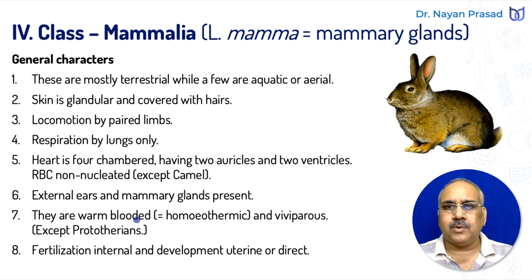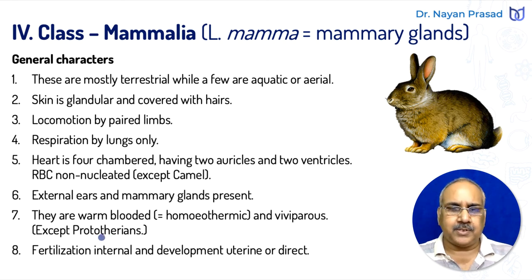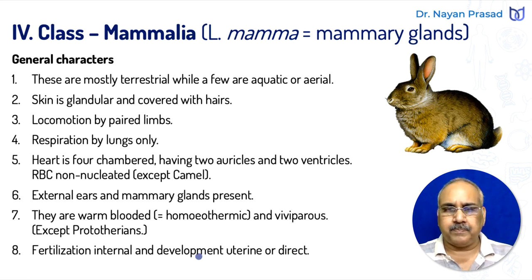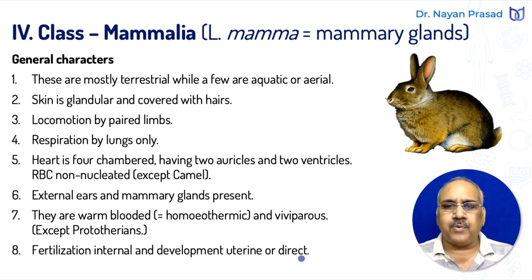Mammals are warm-blooded animals — warm-blooded means homeothermic, having a fixed body temperature. These are mostly viviparous, meaning giving birth to their living young ones. Exception is exhibited by prototherians, which are primitive and less developed mammals. Fertilization is internal, taking place inside the body, and development is direct — meaning no larval stage. Free-living larvae are not found in mammals. The development is specifically termed uterine, meaning it takes place inside the uterus of the mother.